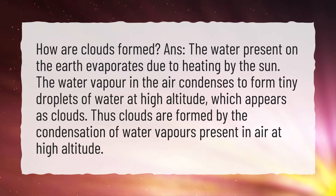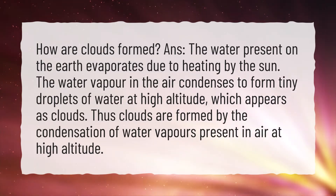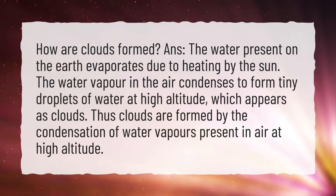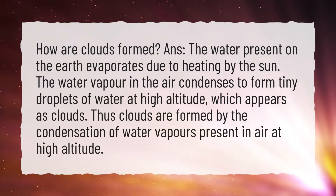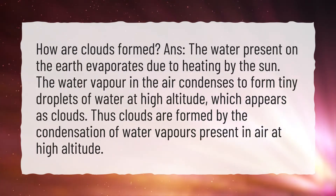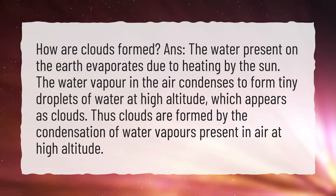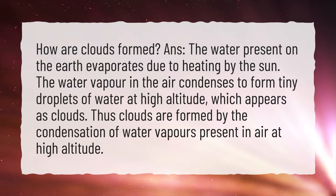The water present on the earth evaporates due to heating by the sun. The water vapor in the air condenses to form tiny droplets of water at high altitude, which appears as clouds. Thus clouds are formed by the condensation of water vapors present in air at high altitude.